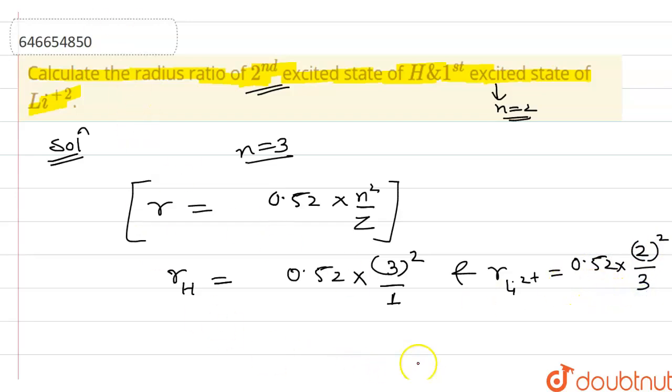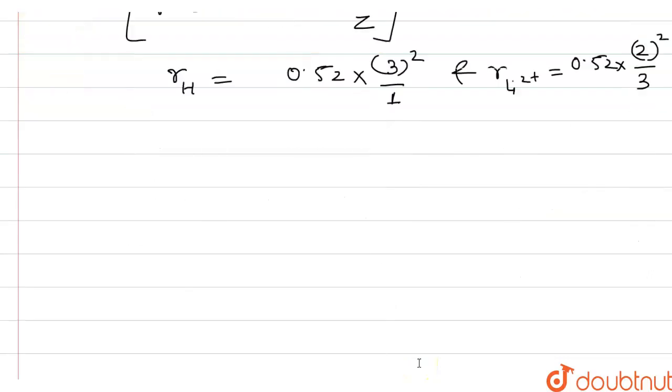So taking the ratio of their radius that is R h upon R lithium 2 plus that is nothing but 0.52 into 9 divided by 0.52 into 4 upon 3.